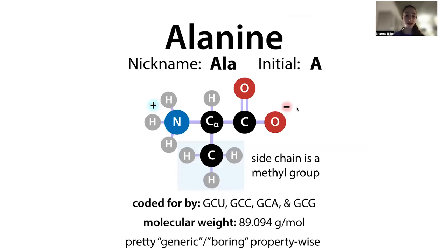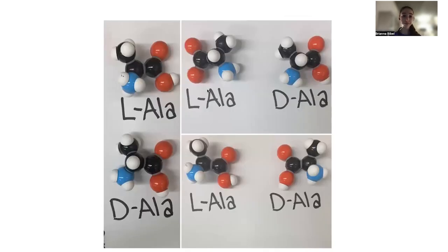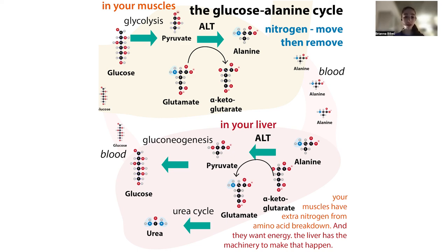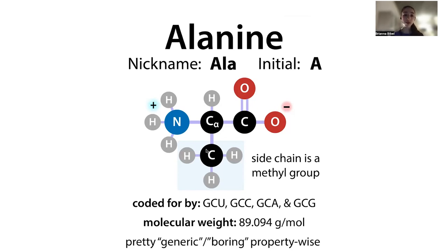Key things to remember about alanine: its side chain is a methyl or CH3 group. It's the second smallest amino acid - only glycine is smaller - but it's the smallest that is chiral. Like all amino acids except glycine, it has right and left-handed versions. In proteins, all amino acids are in the L form, while bacteria use the D form in some of their cell walls. Alanine is non-polar and classified as hydrophobic. It may look boring, but it plays important unique roles - especially in the glucose-alanine cycle helping muscles get rid of waste.